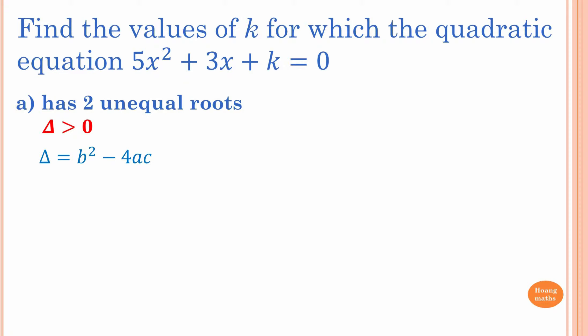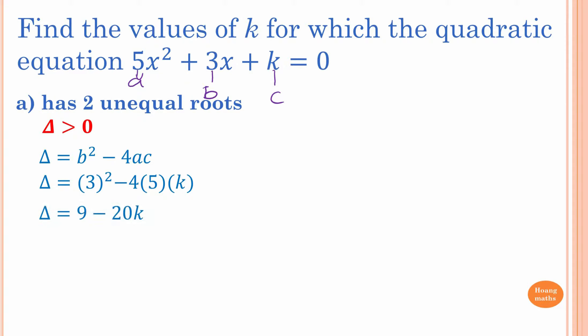We know that a is 5, b is 3, and c is k. So b² minus 4ac is 3² minus 4 times 5 times k. Simplifying, we want the discriminant greater than 0, so 9 minus 20k is greater than 0.